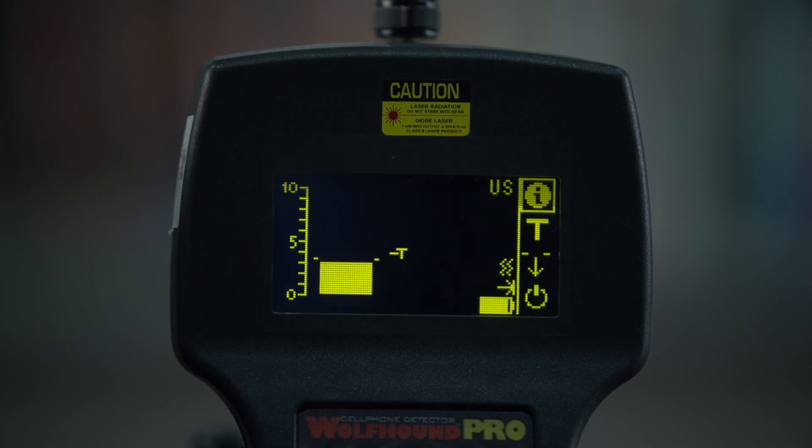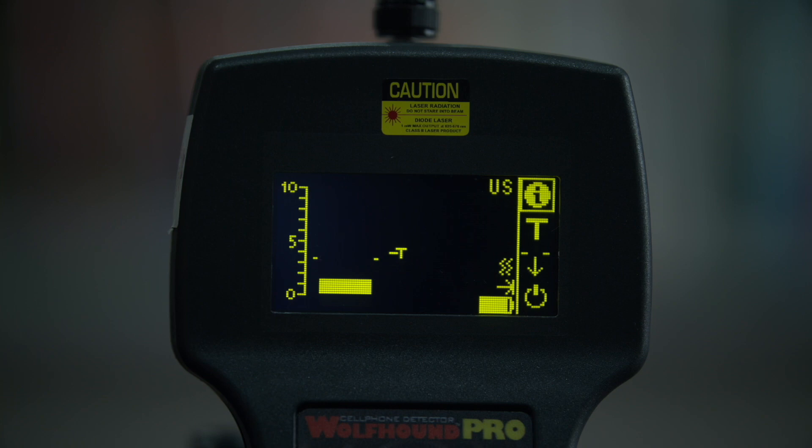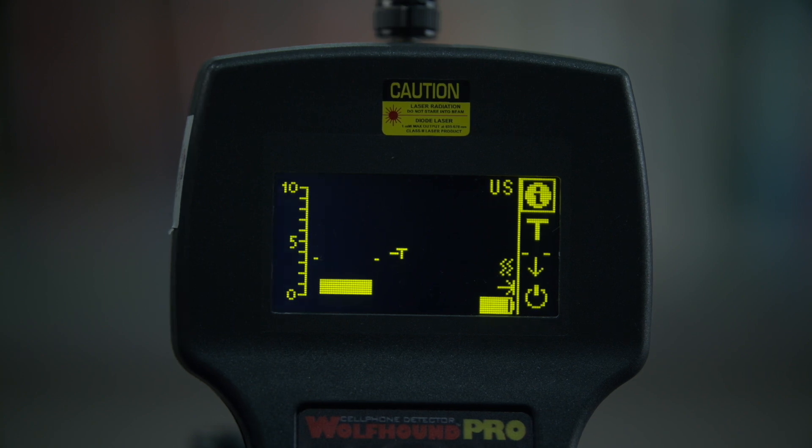Most inmates who use illegal cell phones will use texting as their preferred method of communication. Let's go over that scenario. Since a text message is only a quick data burst, we will use the watermark feature of the Wolfhound Pro to detect it.